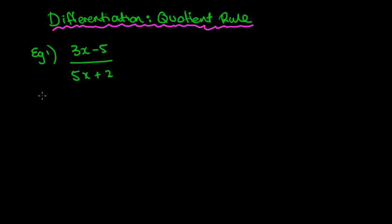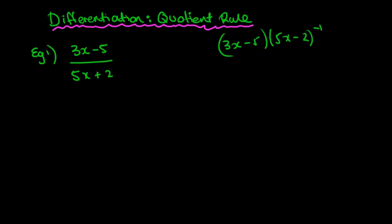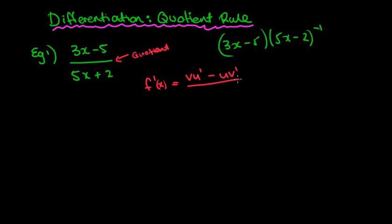In previous lessons, what we've done is rewrite this as (3x - 5) multiplied by (5x + 2) to the negative 1, and then apply the product rule — that's uv' + vu'. However, there is a dedicated rule for the quotient, and remember: quotient means divide. So if you have a function where you're dividing like this, we have another rule we can use.